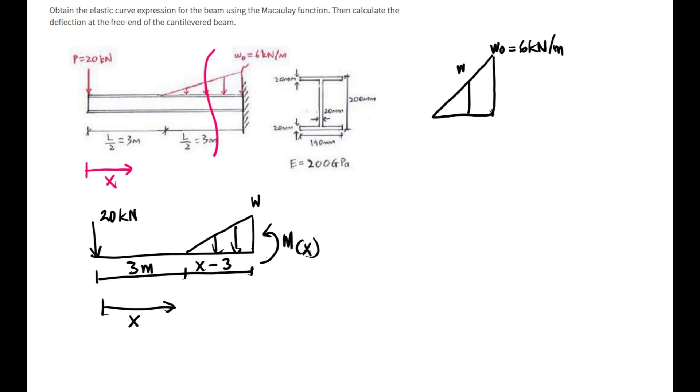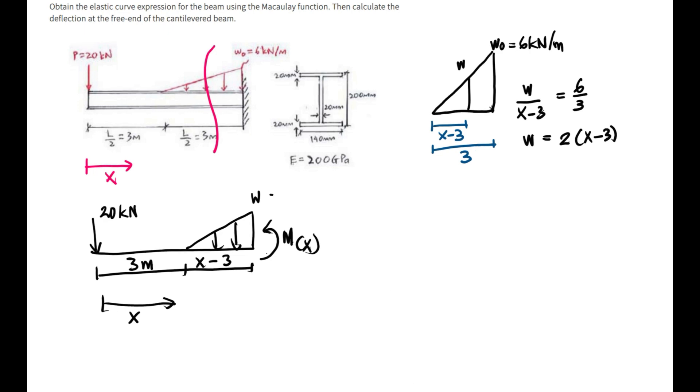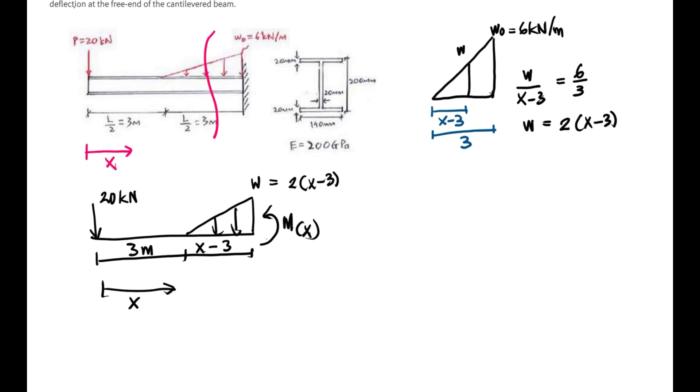From here, I know that from here to here is x minus 3, and here to here is 3. By using a ratio, W over x minus 3 equal to 6 over 3, so W is equal to 2(x minus 3). Now we can start to calculate the reaction.